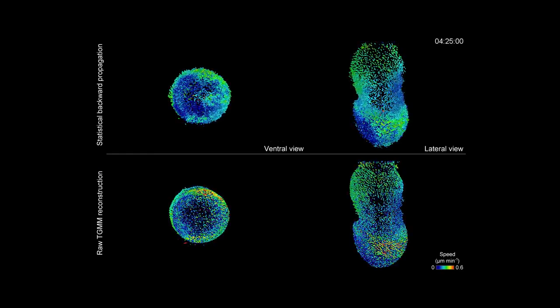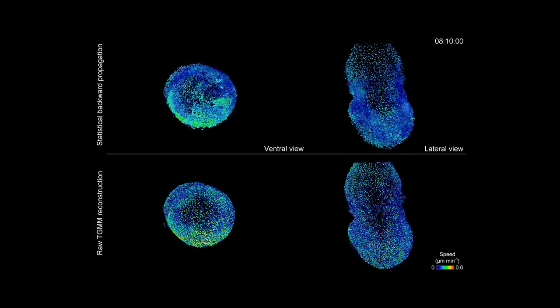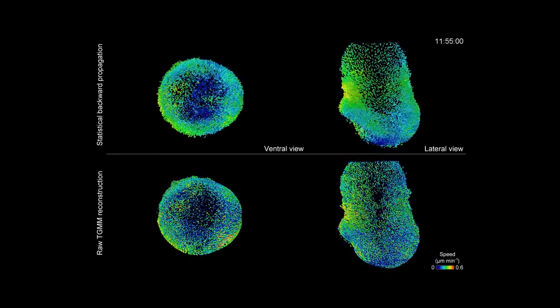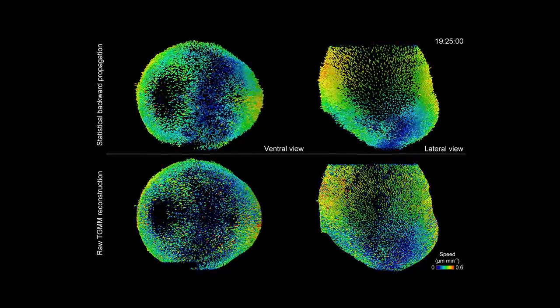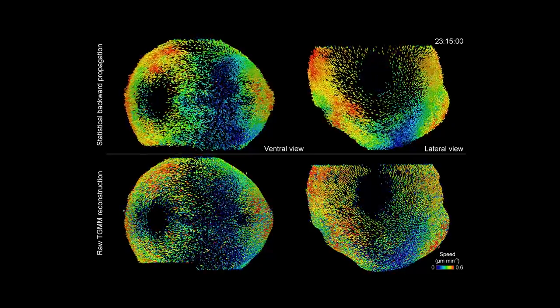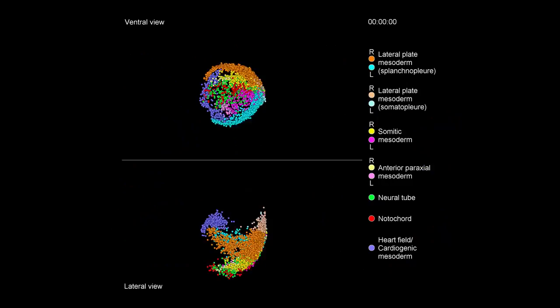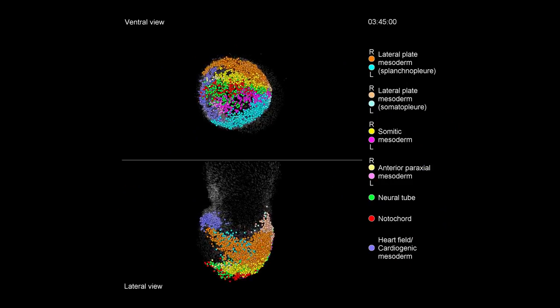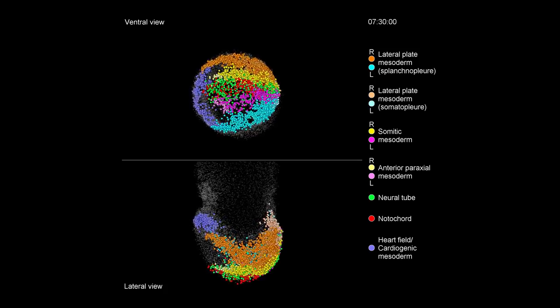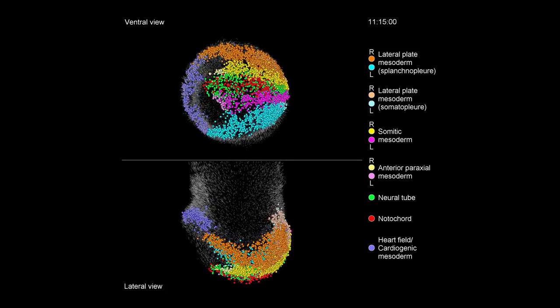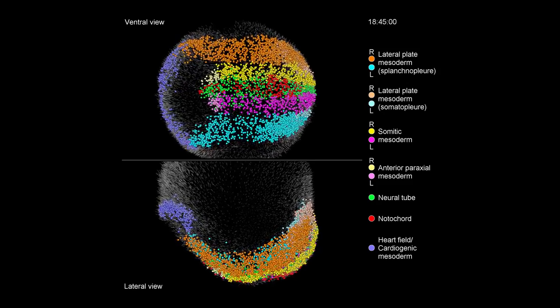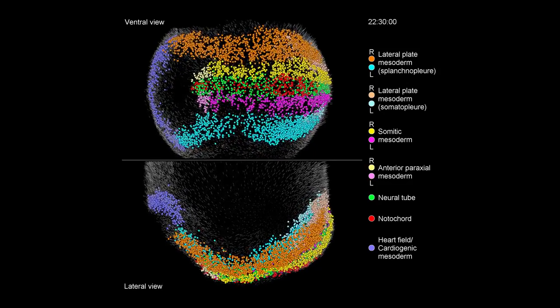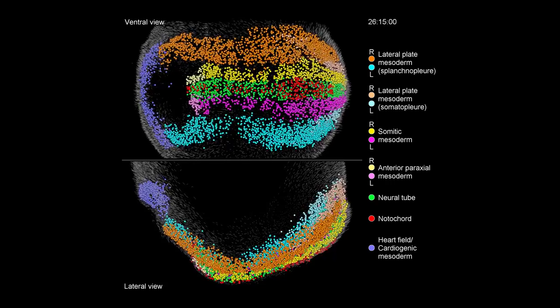We are able to track individual cells from the beginning to the end of our movies by combining our cell tracking framework, TGMM, with a statistical vector flowing technique that is accurate to within two to three cell diameters over the entire time series. Using this method, we have generated the first dynamic cell fate maps during mouse gastrulation and can measure cell population dynamics and systematically trace the origins of individual cells or tissue types with an unprecedented level of detail and precision.